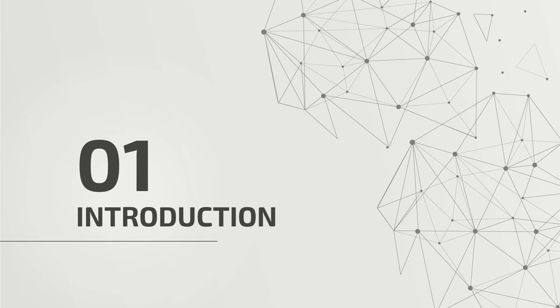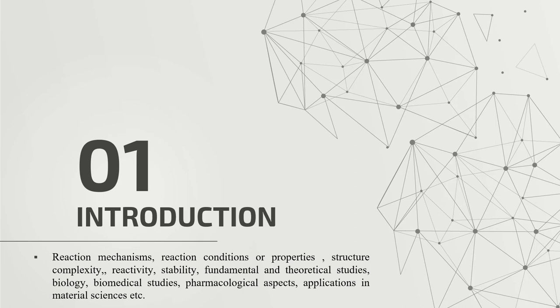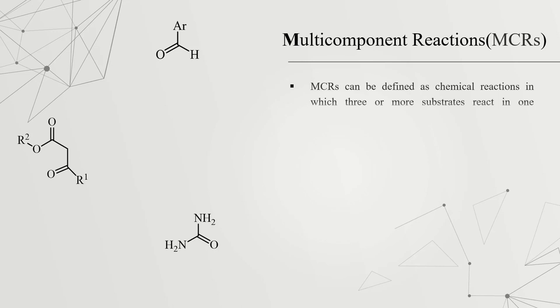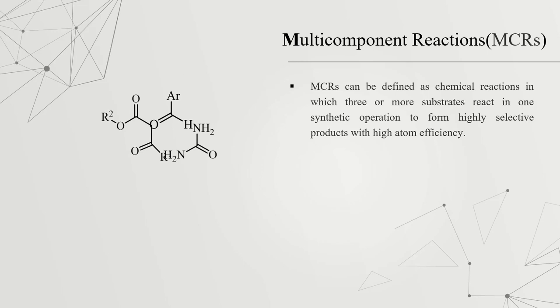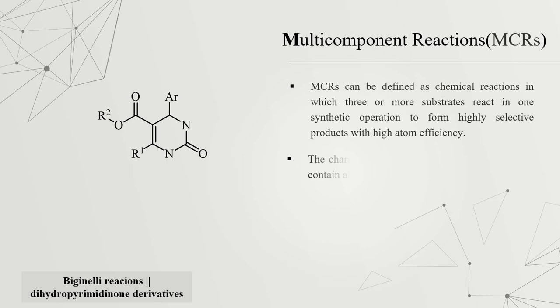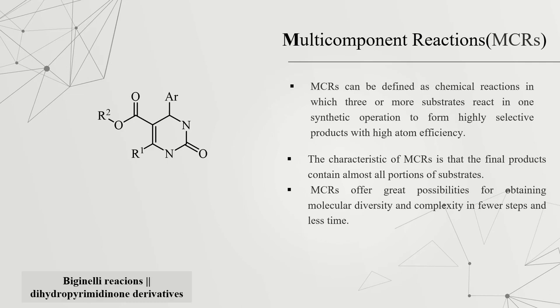In the introduction part, I will explain a brief description of multi-component reactions and the differences between multi-catalytic reactions, one-pot reactions, one-pot and domino, cassette and tandem. Multi-component reactions can be defined as a chemical reaction in which three or more substrates react in one synthetic operation to form highly selective products with high atomic efficiency. The final product contains almost all portions of the substrates, and MCRs offer great possibility for obtaining molecular diversity and complexity in few steps and less time.